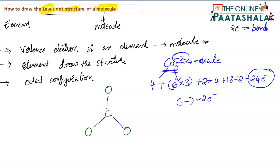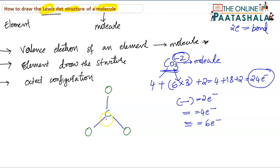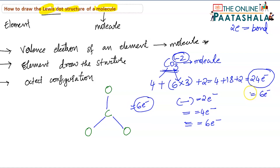When two electrons are there, we can form one bond. Two bonds means four electrons, three bonds means six electrons. Here we have three bonds, so three bonds define 6 electrons. From the total of 24 electrons, 6 electrons are used in bonding, so 24 minus 6 gives us 18 remaining electrons.